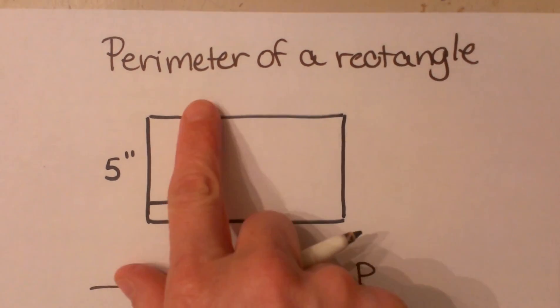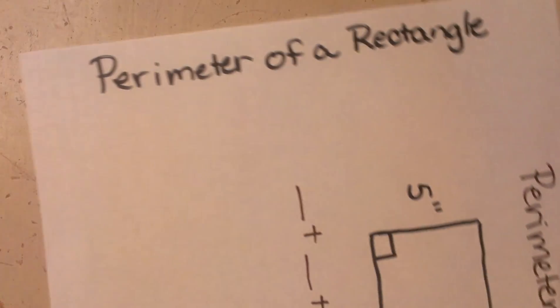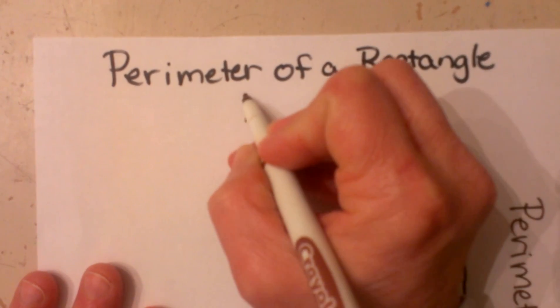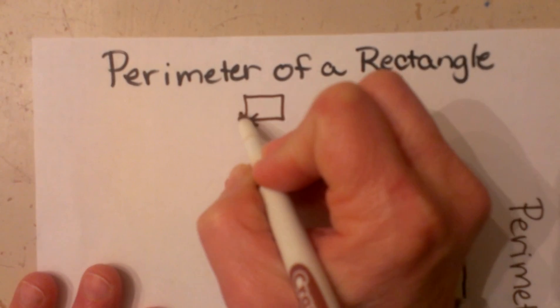We are going to look at how to find the perimeter of a rectangle. The perimeter of a rectangle is the distance around all four sides.